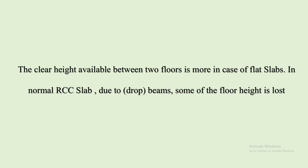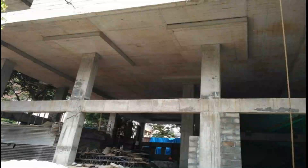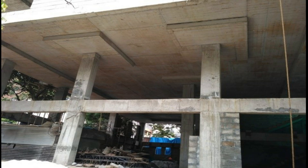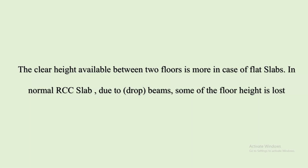So the clear floor-to-floor height is higher in the case of flat slab. As you can see in this picture, there are no beams — the depth of the beam which lessens the floor-to-floor height is not present, so the clear height available is more.